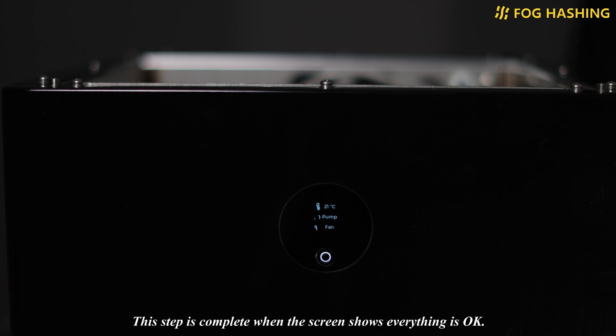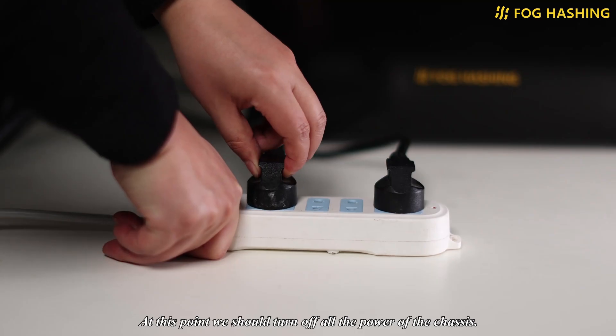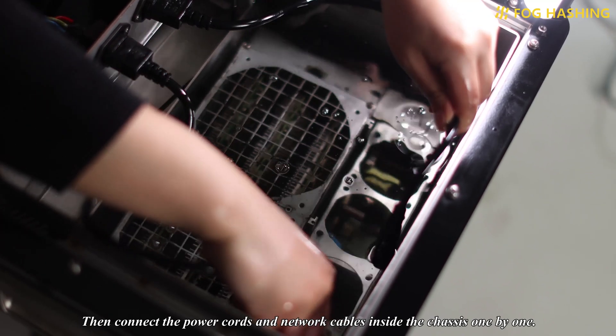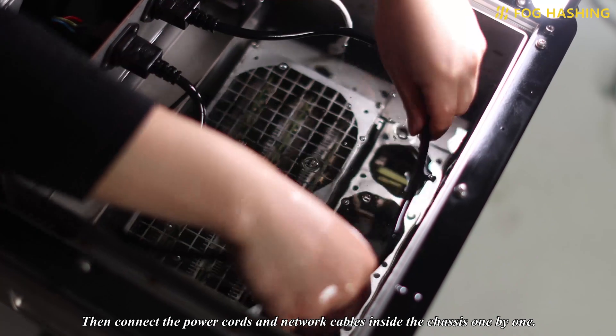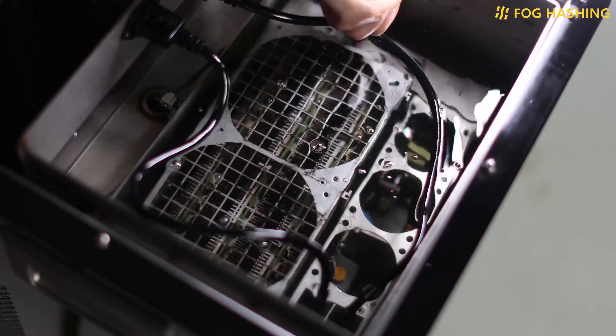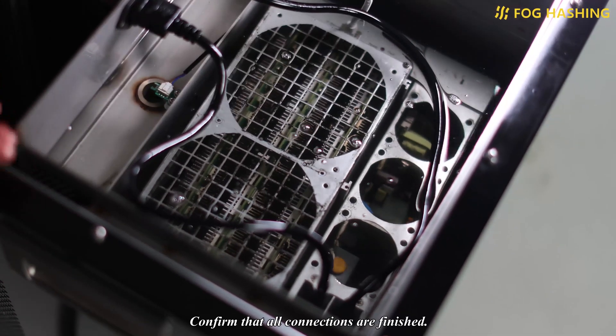This step is complete when the screen shows everything is OK. At this point we should turn off all the power of the chassis. Then connect the power cords and network cables inside the chassis one by one. Confirm that all connections are finished.